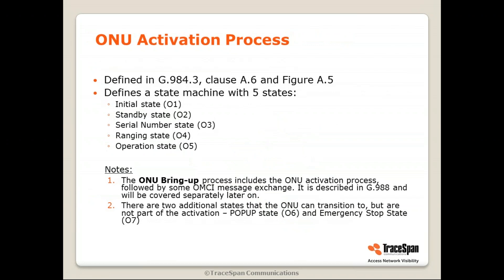The ONU activation process is defined in G984.3, clause A6, figure A5 — the standard for GPON. It defines a state machine with five states, starting from initial state O1 and completing with operation state O5, which means the ONU is active. Do not confuse activation with ONU bring-up — ONU bring-up includes the activation plus additional OMCI messages, described in G988. There are also two additional states: pop-up O6 and emergency stop state O7, which are not part of the normal activation.